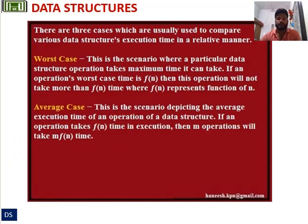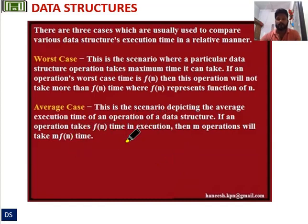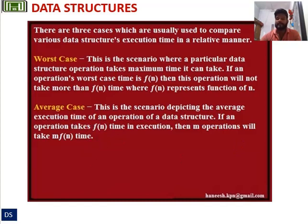Moving to the next case, that is average case. This is the scenario depicting the average execution time of an operation of a data structure. If an operation takes f(n) time in execution, then m operations will take m·f(n) time. This is the average case.